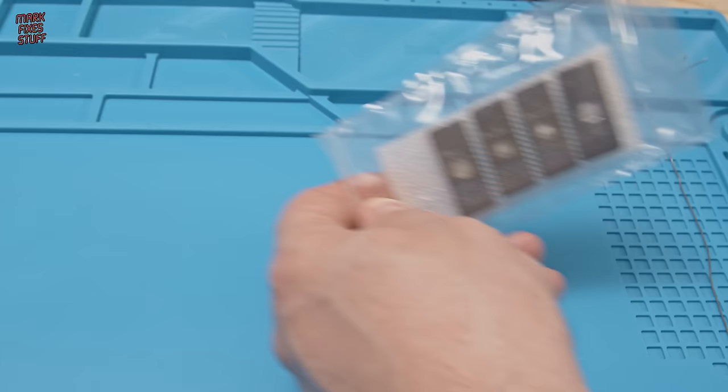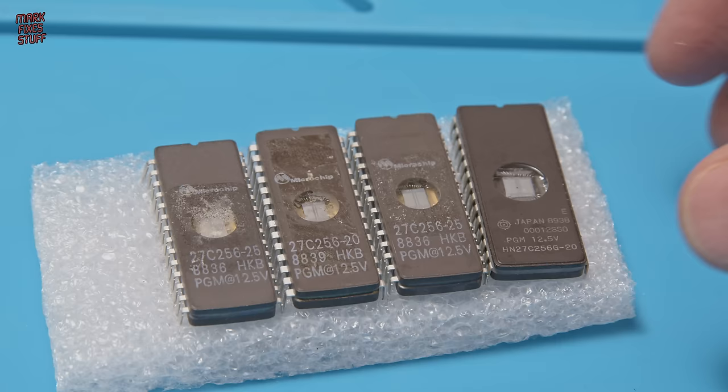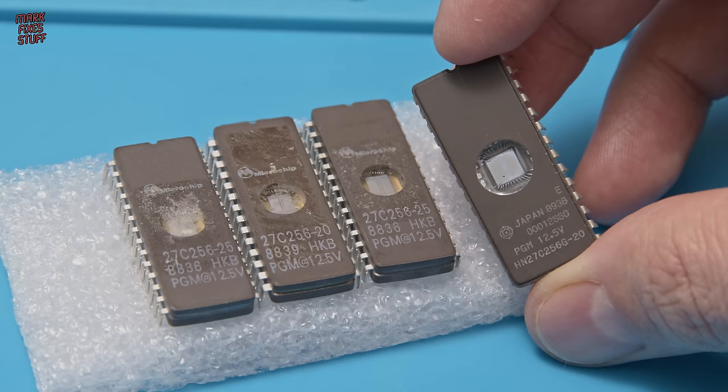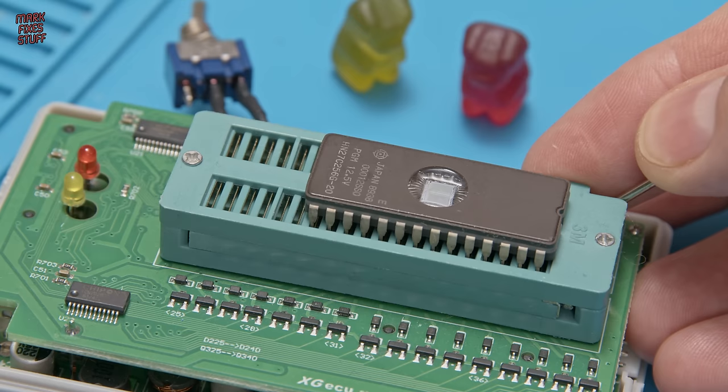Let's liberate our silicon storage from its luxurious packing. I've actually changed my mind and I think we'll use the Hitachi chip because it's a bit cleaner than the others. That PGM 12.5V is the programming voltage that we'll need. Remember that for later.